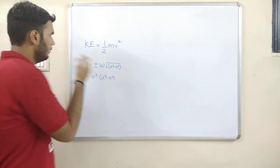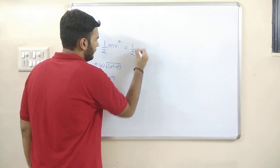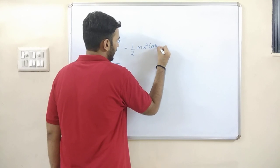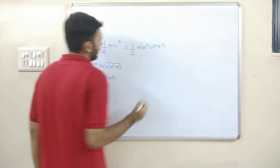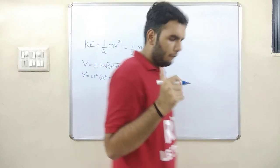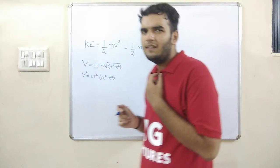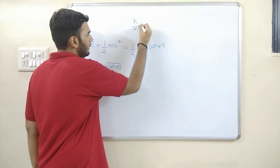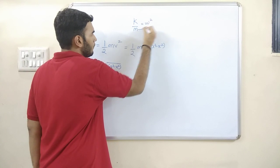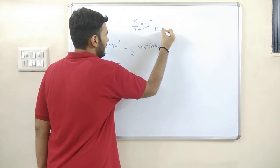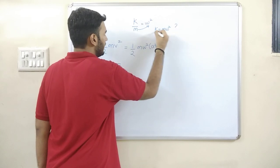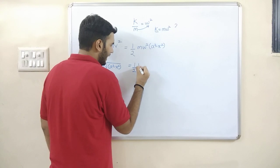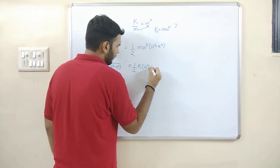Now I can substitute this v² into the kinetic energy formula. What I get is: KE = half m times omega² times (a² minus x²). This is the formula for kinetic energy, but it is a little inappropriate because we have the relation k/m = omega², which gives k = m·omega². So why not substitute k instead?